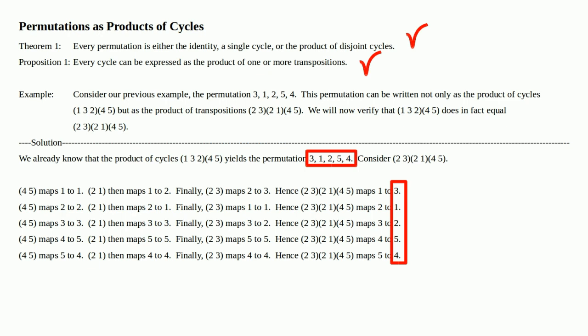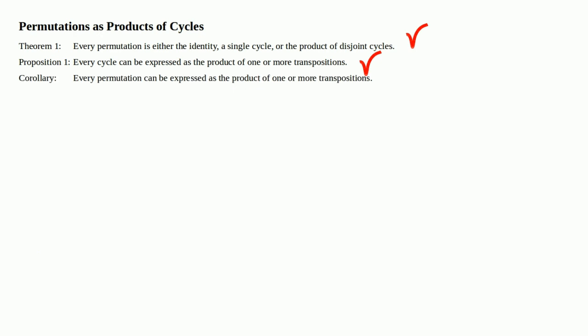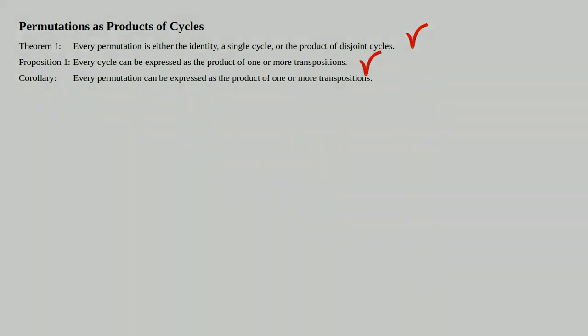Note that what we ended up with is the ordering (3, 1, 2, 5, 4), which is what we set out to show. Therefore, the product of cycles (1, 3, 2) times (4, 5) is equal to the product of transpositions (2, 3)(2, 1)(4, 5). This is an example of Proposition 1, which states that every cycle can be expressed as the product of one or more transpositions. Here we've represented a product of cycles as a product of transpositions. Next time, we'll prove the corollary to Proposition 1 that every permutation can be expressed as the product of one or more transpositions, so stay tuned.